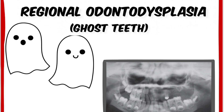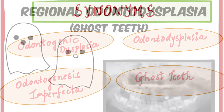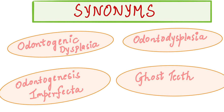Hello guys, welcome to A to Z Dentistry. Today we will be studying a very interesting topic: regional odontodysplasia, also known as ghost teeth. The synonyms for this condition include odontogenic dysplasia, odontodysplasia, odontogenesis imperfecta, and ghost teeth.